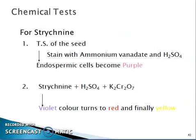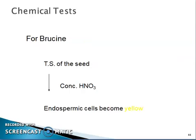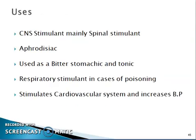Chemical tests: transverse section of the seed stained with ammonium vanadate and H₂SO₄ — endospermic cells become purple. Strychnine plus H₂SO₄ plus K₂Cr₂O₇ gives violet color, turns red, and finally yellow. For brucine, transverse section of the seed plus concentrated HNO₃ — endospermic cells become yellow.